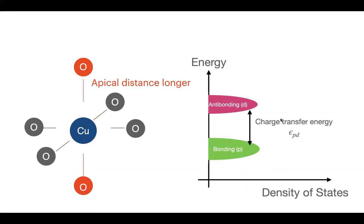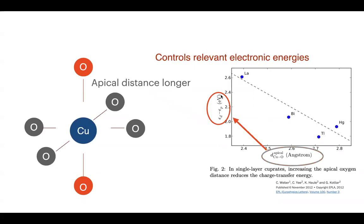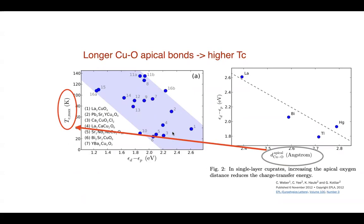Thinking beyond this simple picture: if you have a longer apical distance, you modify t and change the charge transfer energy — the energy difference between anti-bonding and bonding orbitals. This apical copper-oxide bond length empirically controls the relevant electronic energies, and this distance is strongly correlated with Tc in the cuprates. It's not perfect for structures that differ significantly, but it gives ideas about designing new potential materials.